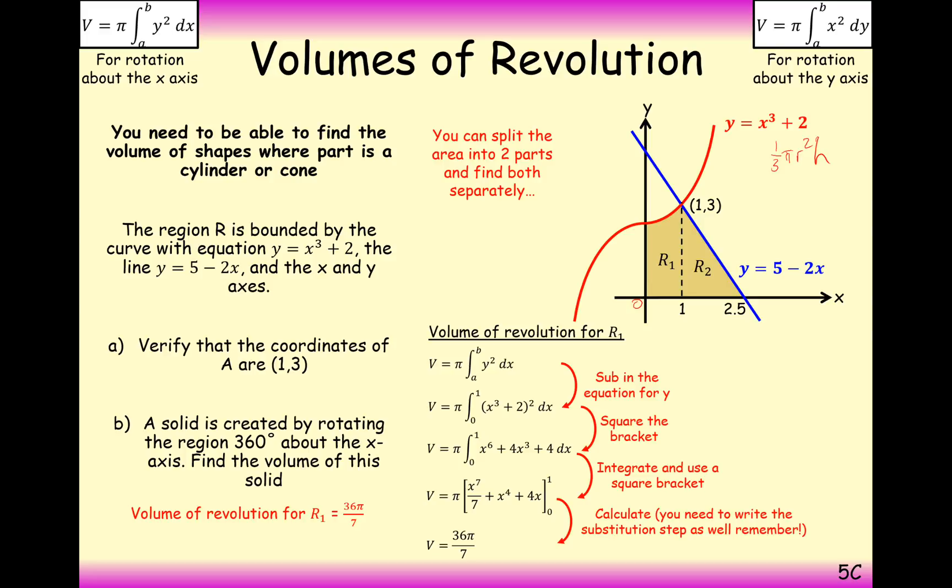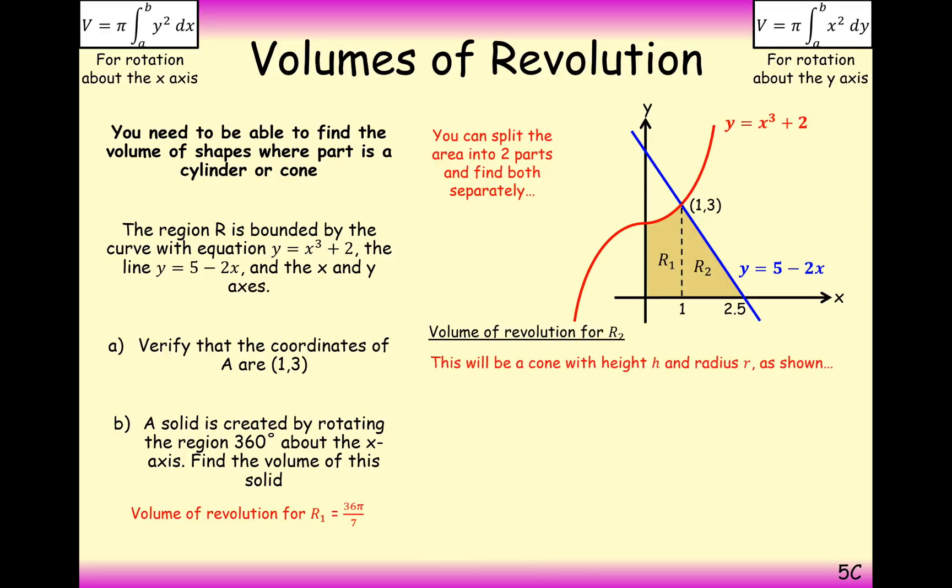So that's the area of r1. That's fairly straightforward. The volume for revolution 2 could be constructed by a cone. Volume equals a third pi r squared h. So apply your dimensions in there. The height of this cone is going to be 1.5, because it goes from 1 to 2.5. And the radius of this cone is going to be 3, because it's going to revolve around this way. So you'll effectively have a cone that looks like this. And here we get v equals 9 pi over 2. And the final question here is to just add these two volumes together to get the total volume. And here we clearly get 135 pi over 14.